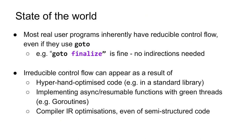In terms of the state of the world right now, most real user programs actually do have reducible control flow to start off with, even if they use go-to somewhere. For example, there's a very common pattern in C where you will go to some finalizer block at the end of a function in order to clean up various things in exceptional conditions. This control flow is actually reducible, so no indirections are incurred when you compile this code to WebAssembly.